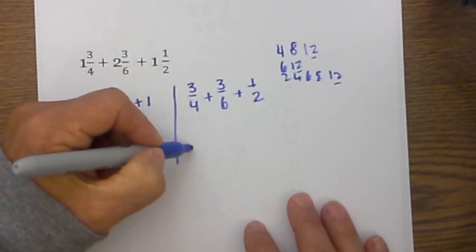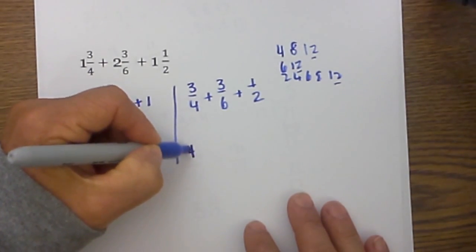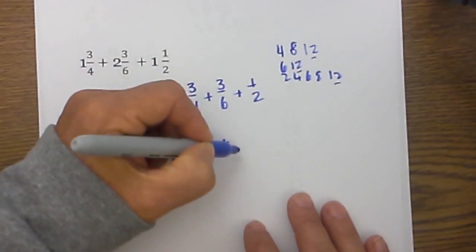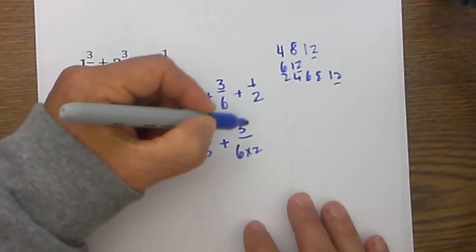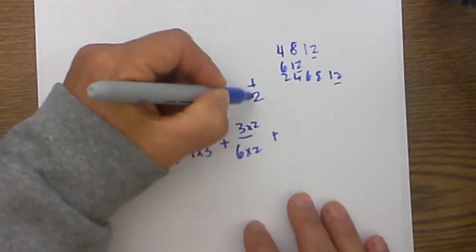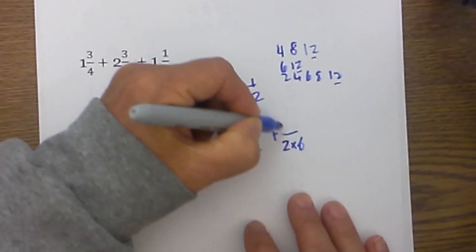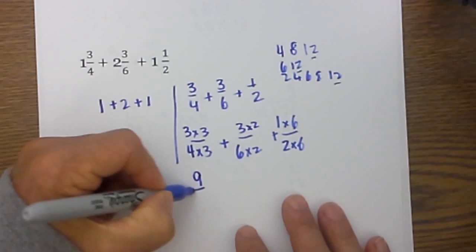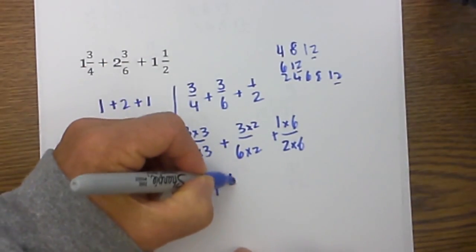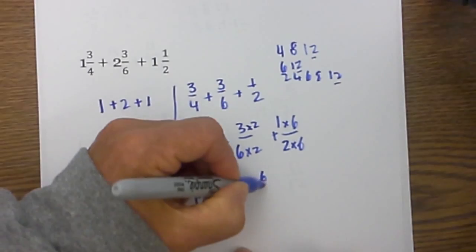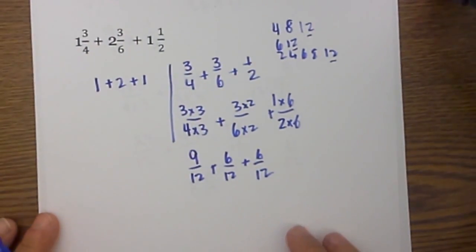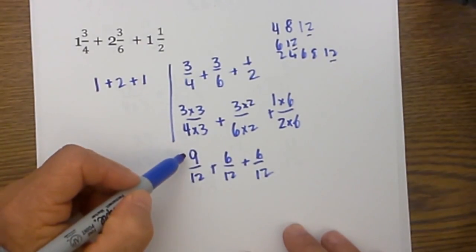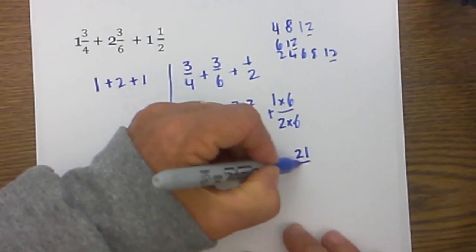So now I am going to rewrite these. Four goes into twelve three times, so it will be four times three and I will do the same to the top. Plus six goes into twelve two times, and three times two. And two goes into twelve six times. I now just multiply these out: three times three is nine over twelve, plus six over twelve, plus six over twelve. I then add these fractions together: six plus six is twelve, plus nine is twenty-one over twelve.